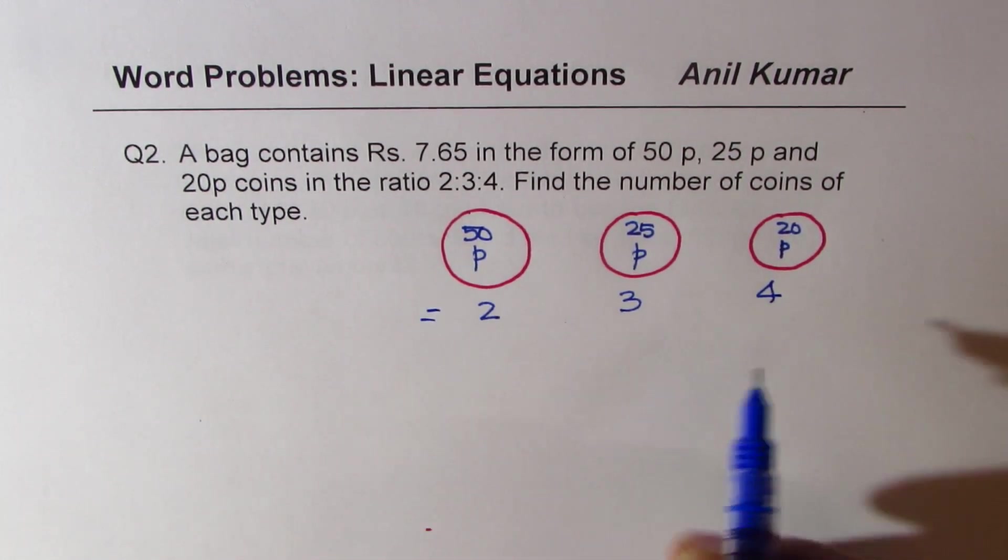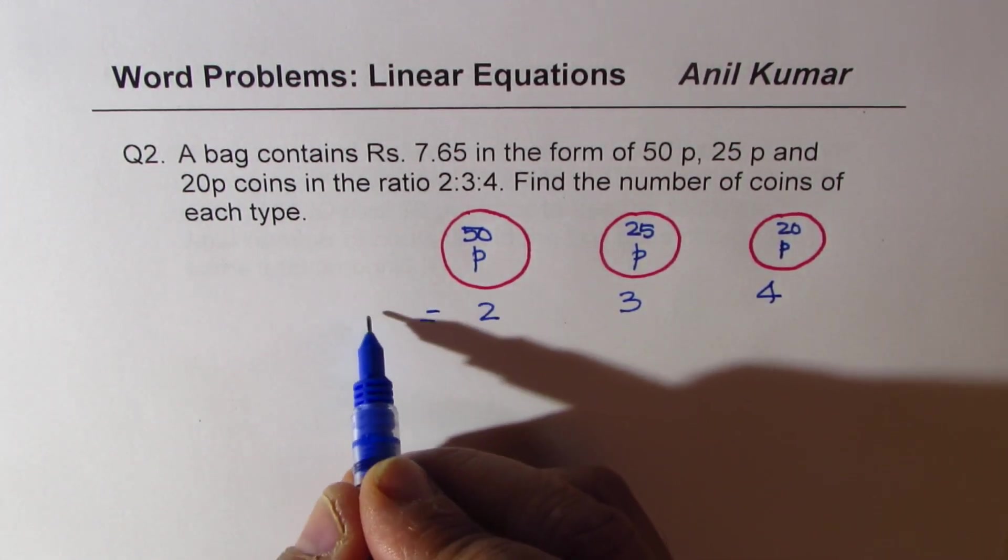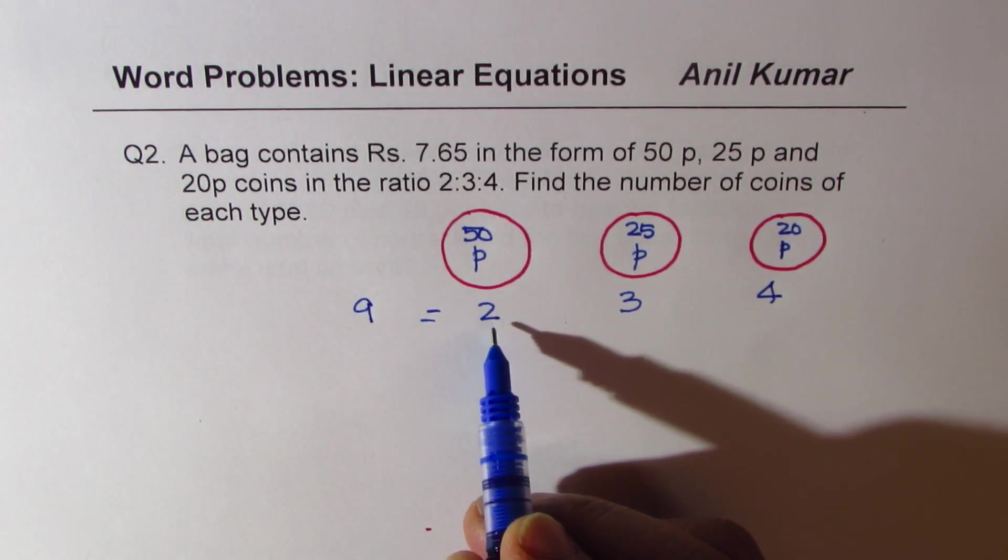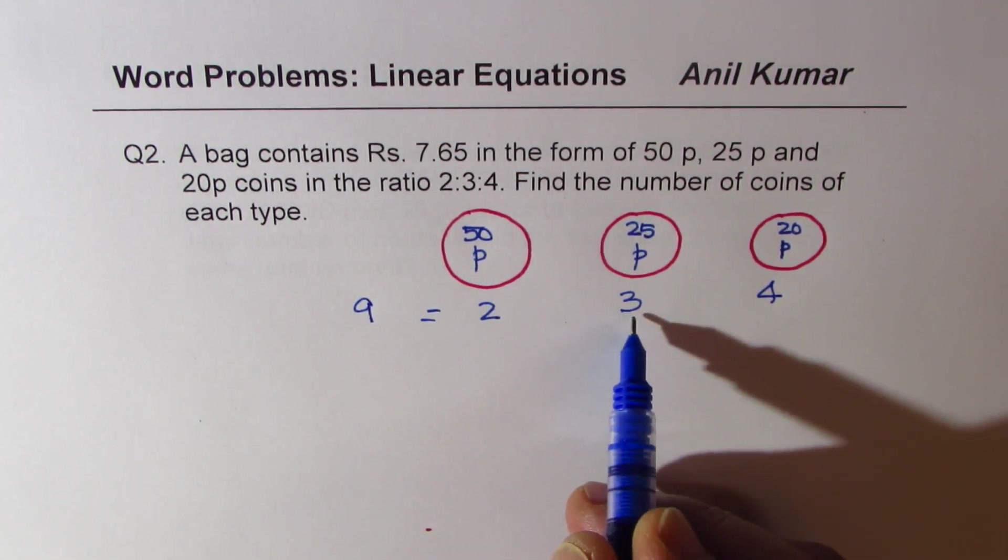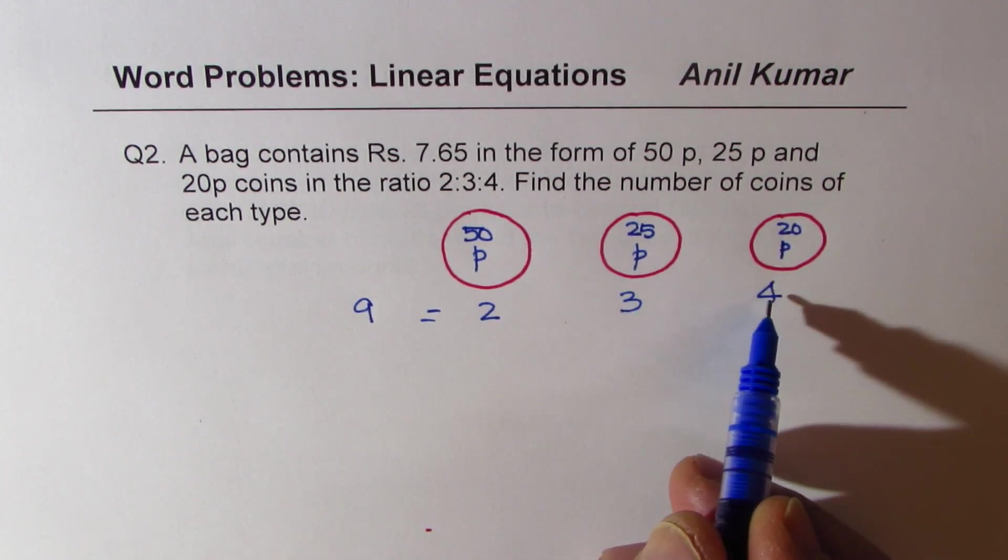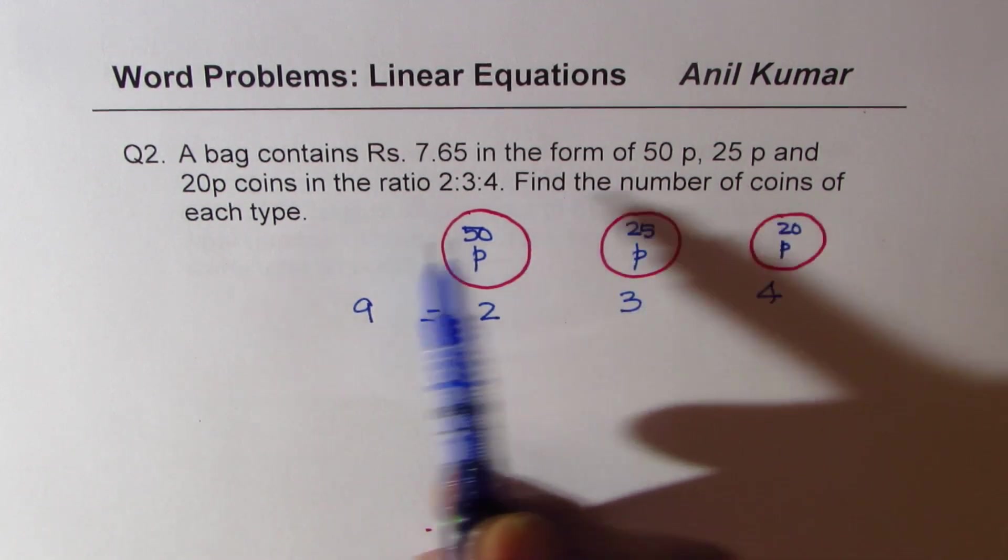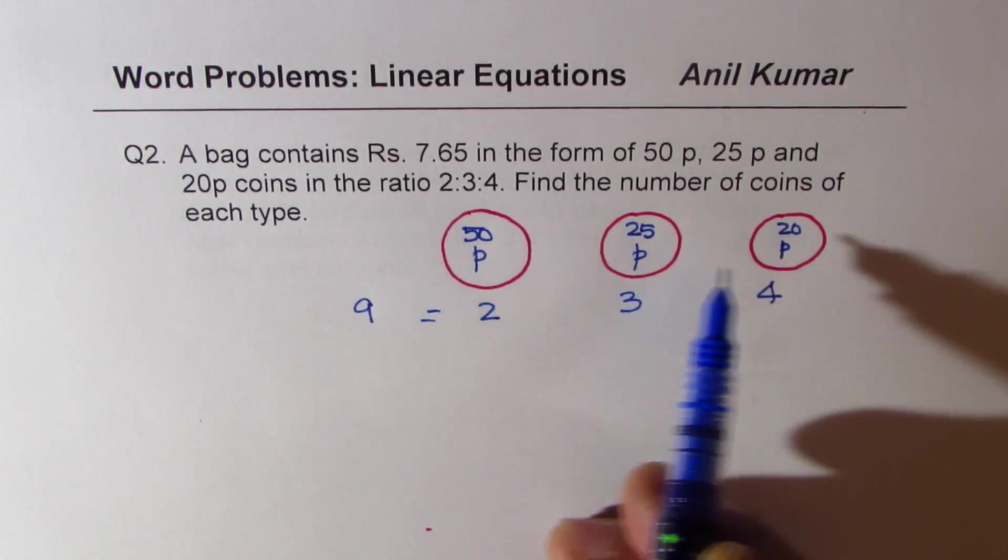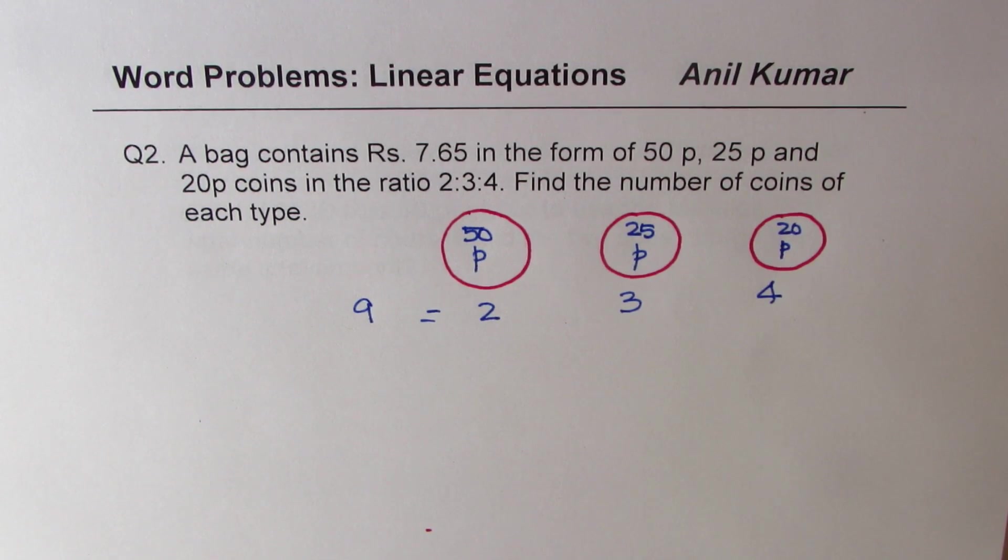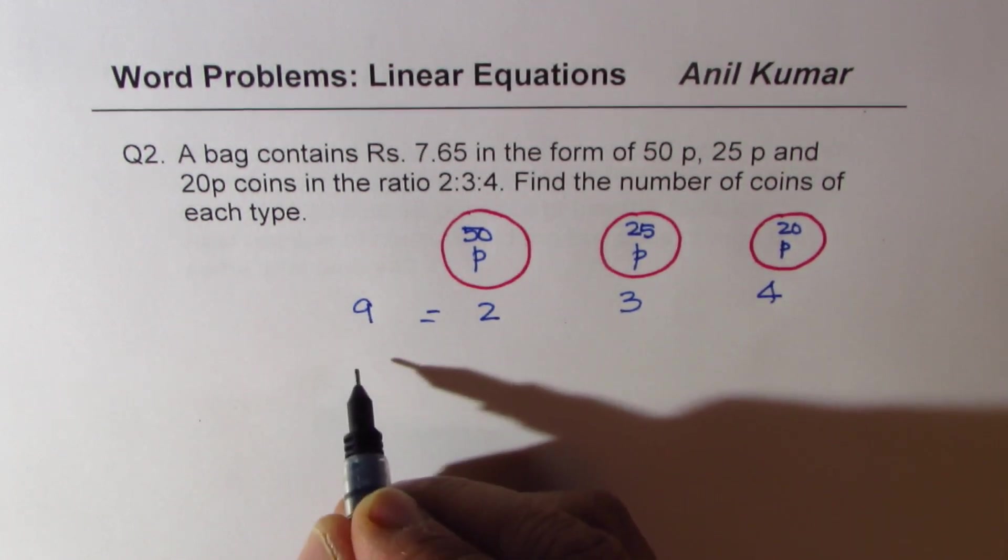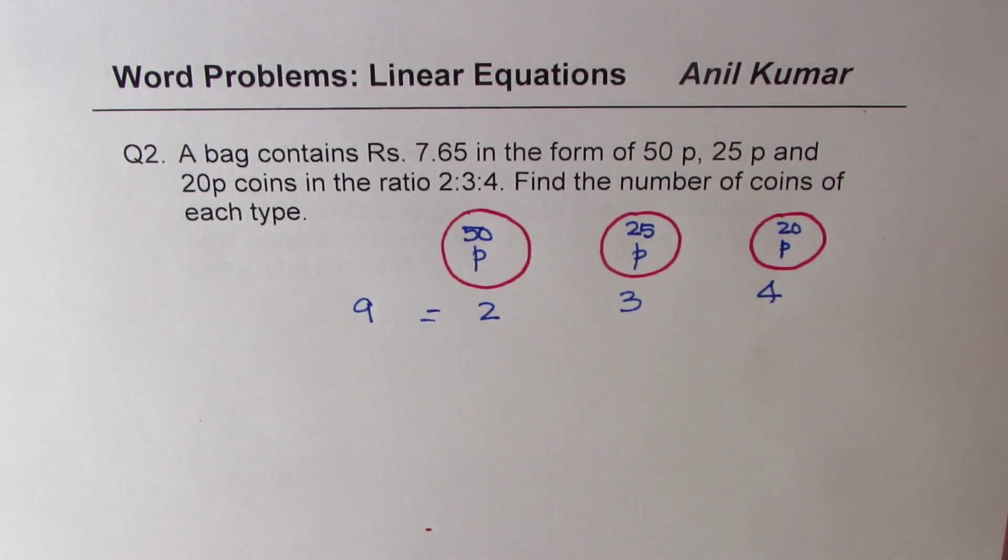We are given that the ratio of these is 2:3:4. So that is to say, if we have 4 plus 3 is 7 plus 2, 9 coins, in that case 2 of them will be 50 paisa, 3 of them will be 25 paisa, and 4 will be 20 paisa. We need to find the total number of coins of each type. So let us say the total could be multiple of 9 only. So let's say we have 9 times x.